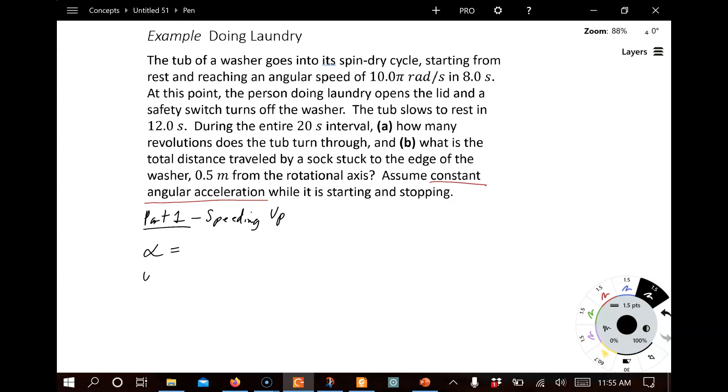And we have our five angular variables here. So we've got the angular acceleration, the initial angular velocity, the final angular velocity, and the angular displacement, and the time interval Δt. Now, for this first part, we know that it starts from rest. So this is some key bit of information. Just as before, starting from rest means that the initial angular velocity is zero.